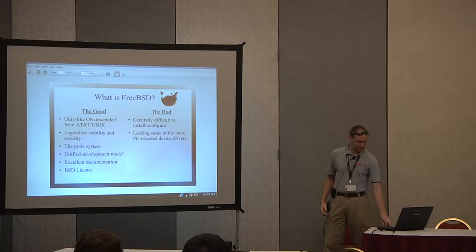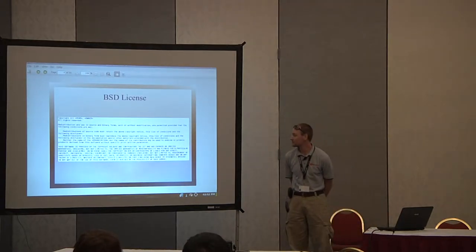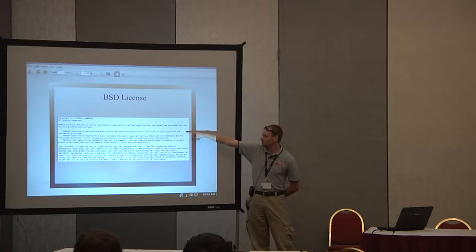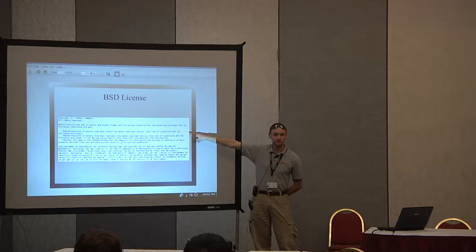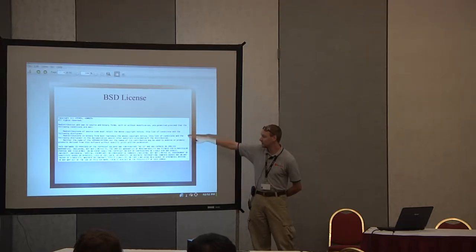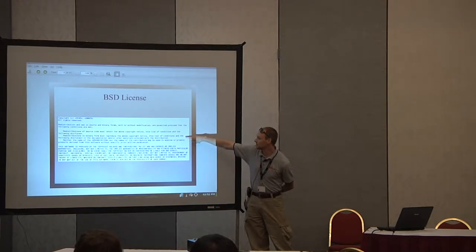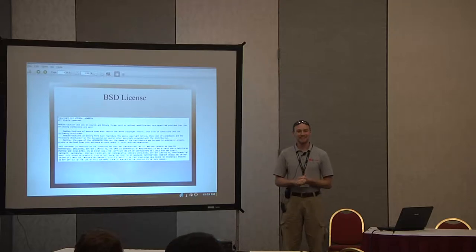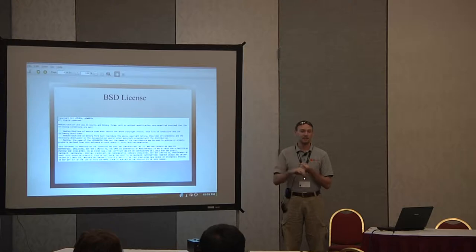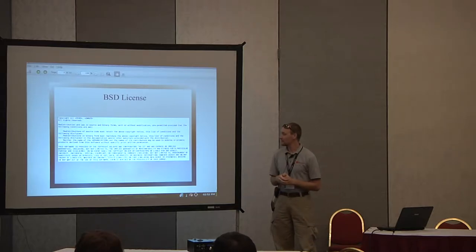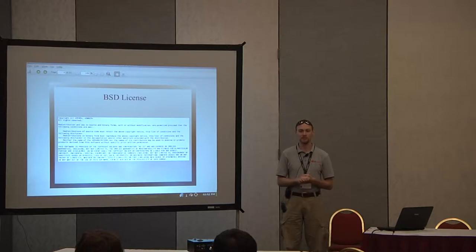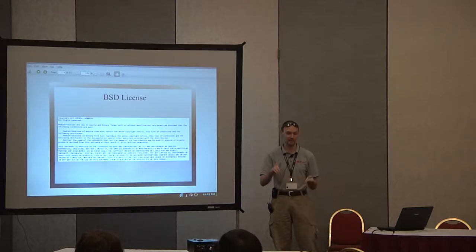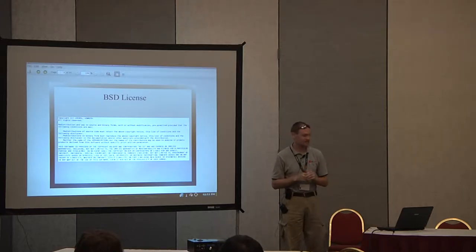The BSD license has just three clauses. First, include the copyright in anything you develop from the software. Second, reproduce the copyright. Third, don't sue us if it breaks — and you can't use the name of the application without the author's consent. In more recent days it's been shrunk to two clauses; they removed the redistribution clause. So it's: include our copyright and don't sue us if it breaks. Nice and easy.